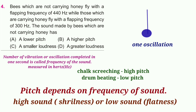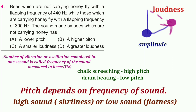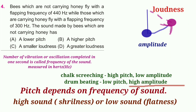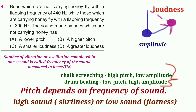Chalk screeching has a high pitch, but drum beating has a low pitch. Loudness depends on amplitude — the maximum distance traveled by the bob of a pendulum from its mean position is called the amplitude of the vibration. Higher amplitude means louder sound; lower amplitude means feeble sound. Drum beating has higher amplitude than chalk screeching, so it has a louder sound.